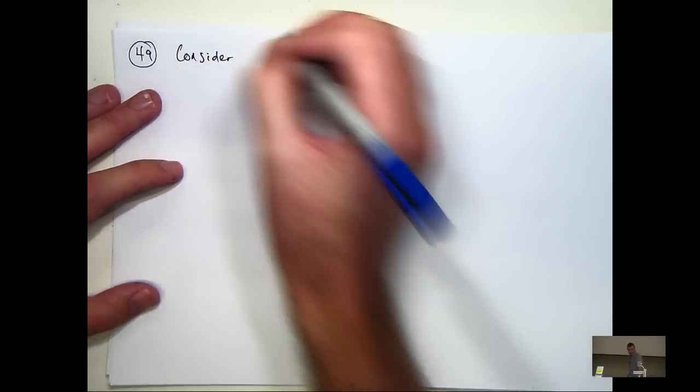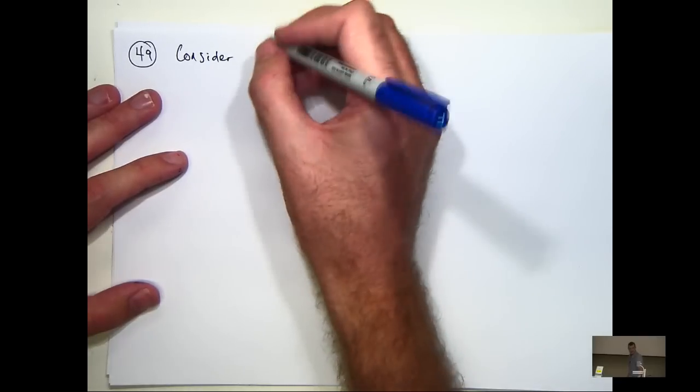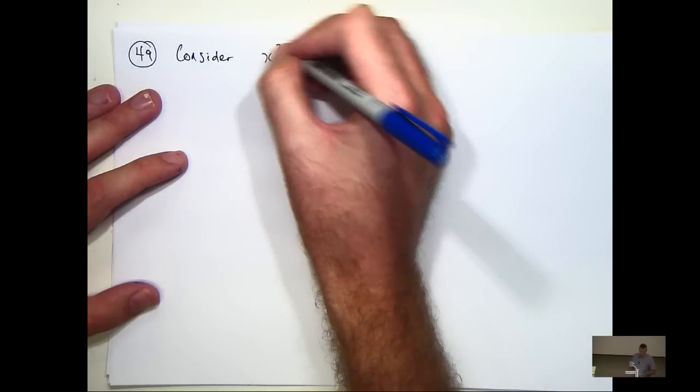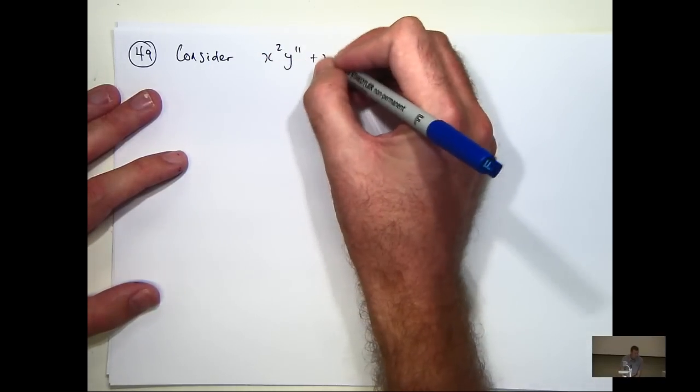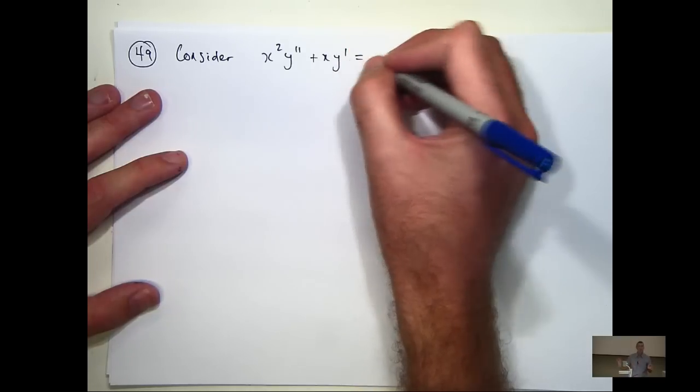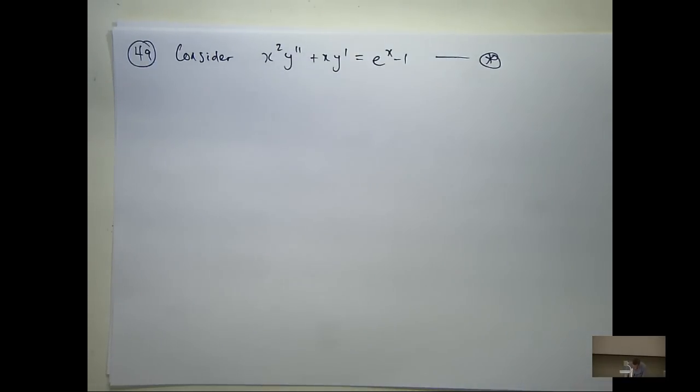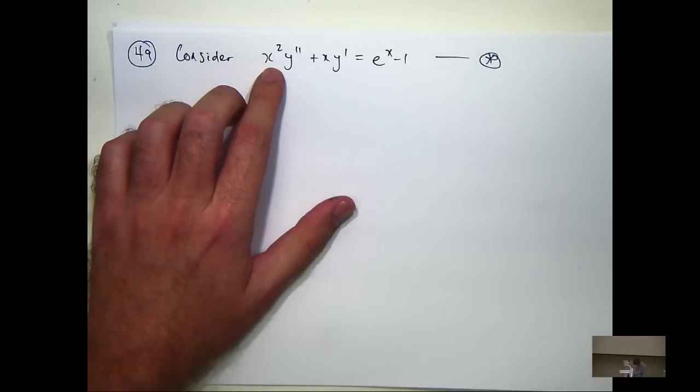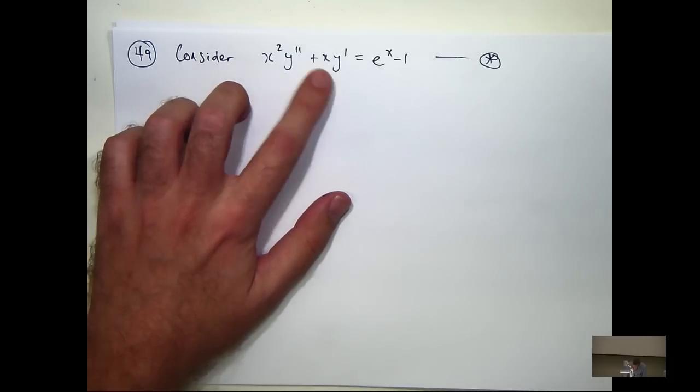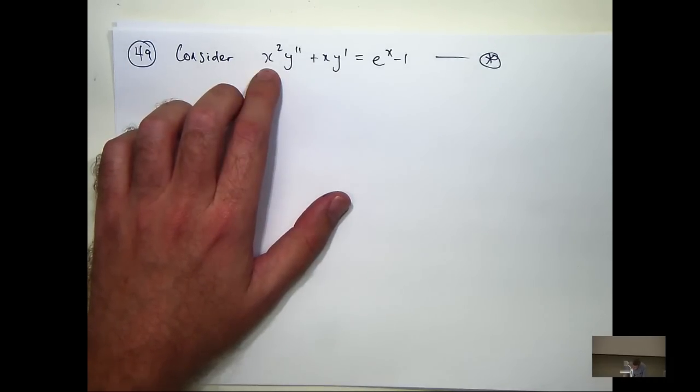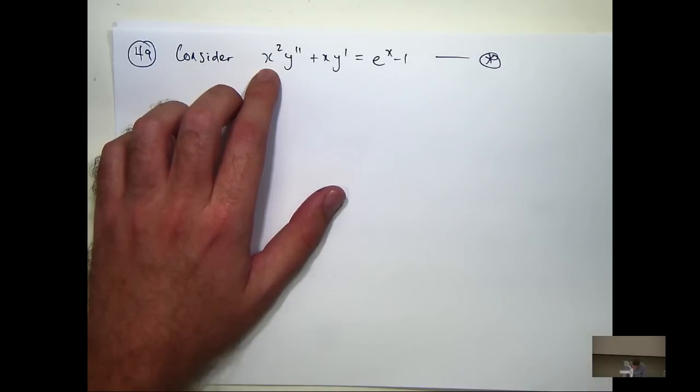So let's consider the following ODE. Now, the problem with this ODE is that it's linear, it's second order, but the coefficients are non-constant. So we don't know how to solve this.